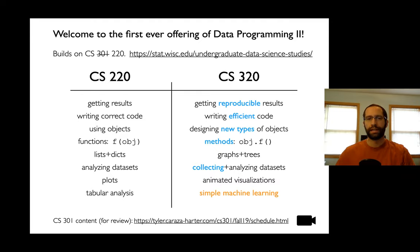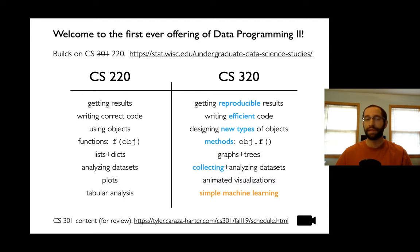Hopefully you've all taken Data Programming 1. I know there are some exceptions. Data Programming 1 used to be numbered 301 or 220. Both of these courses are really a foundation for the new Data Science major, but I know it applies to a lot of other people too. If anybody's interested in the Data Science major, I have a link for that up at the top. I'm just trying to compare and contrast this course with the previous one, CS220.